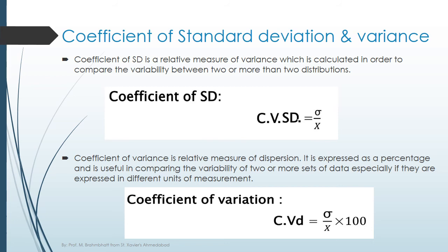Let us see the coefficient of standard deviation and variance — both are relative measures of dispersion. The coefficient of standard deviation is a relative measure calculated to compare variability between two or more distributions. Its formula is: coefficient of SD equals standard deviation divided by x-bar. The coefficient of variance is expressed as a percentage and is useful for comparing the variability of two or more sets of data, especially if expressed in different units of measurement. Its formula is: coefficient of variance equals (standard deviation divided by x-bar) times 100. Always remember that the final result of the coefficient of variance is expressed as a percentage.